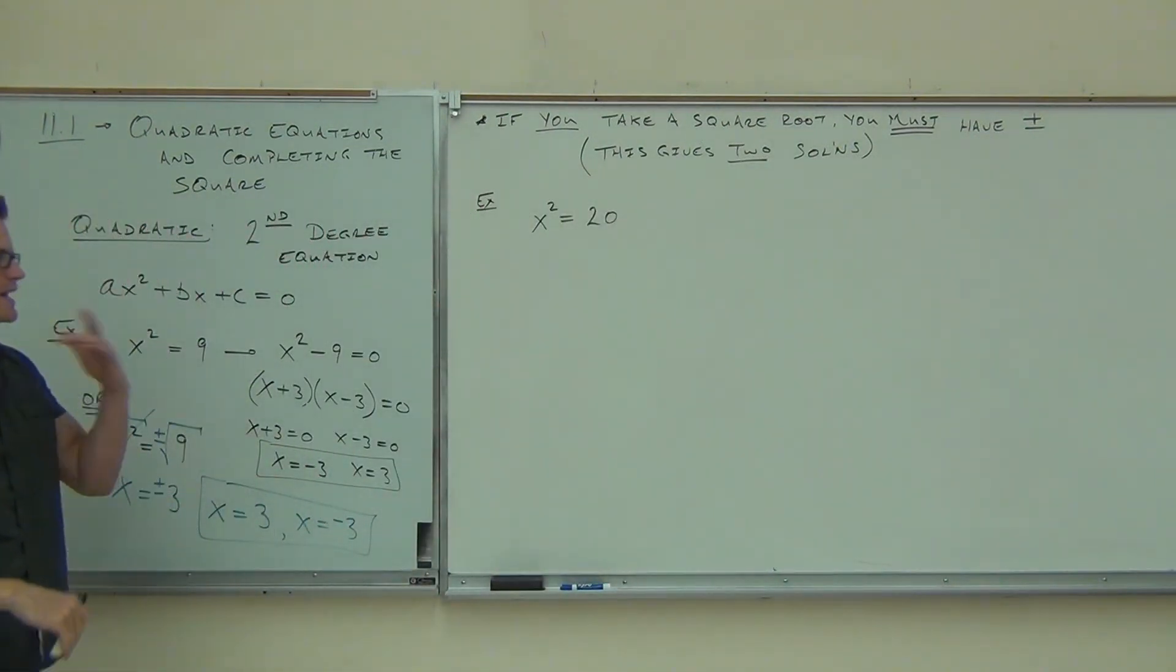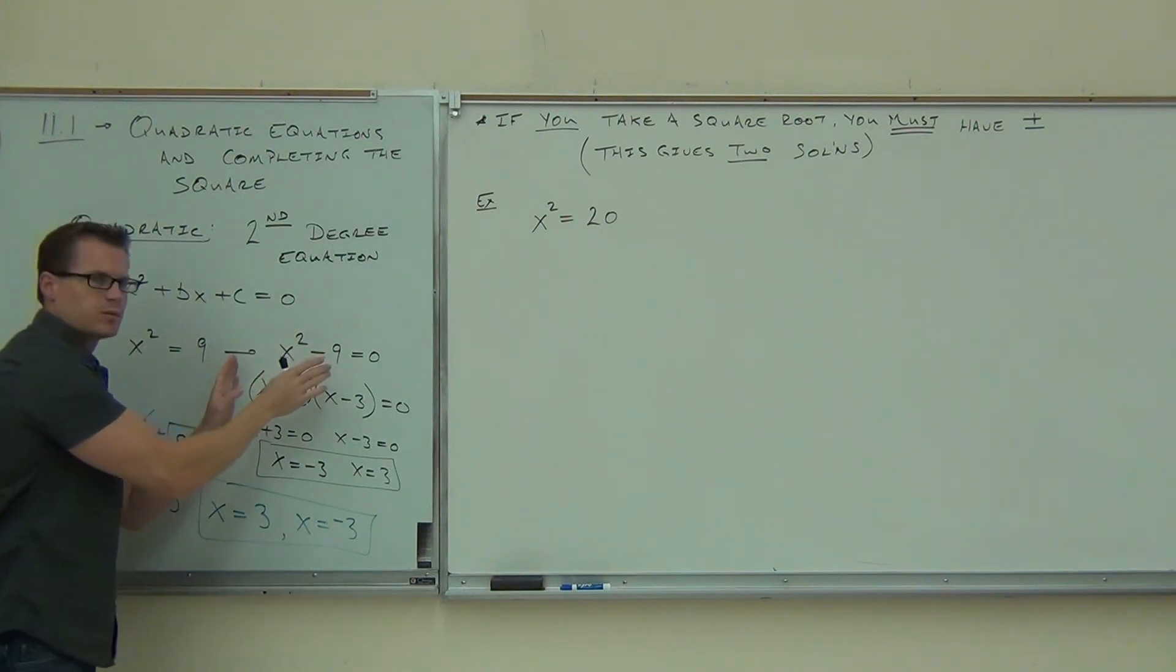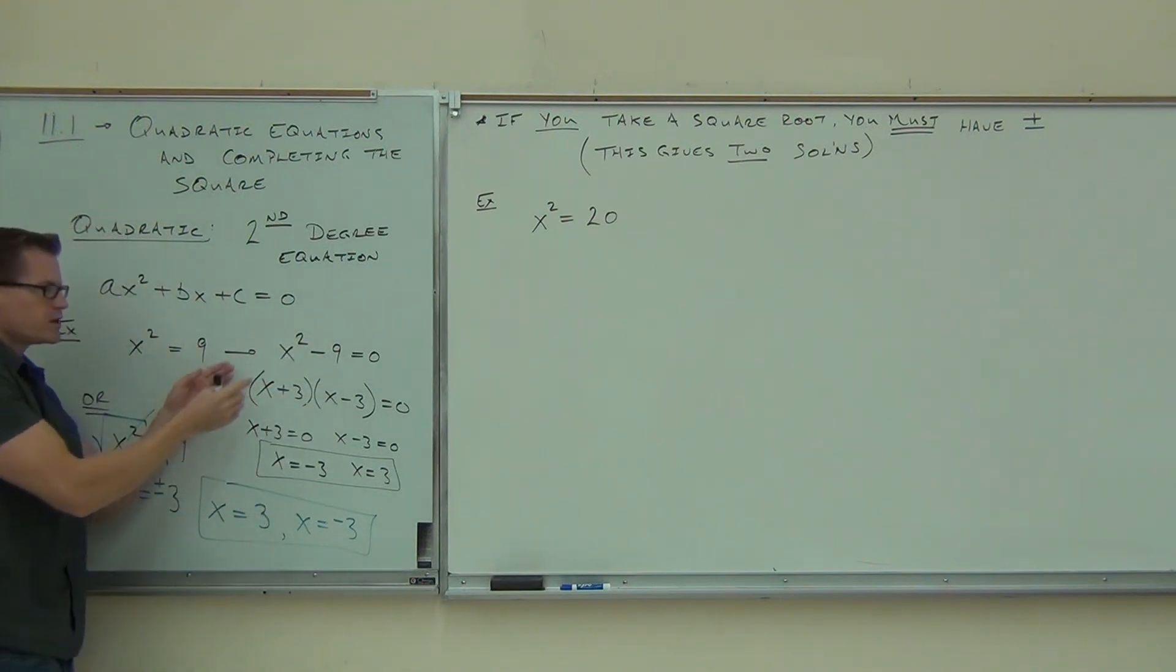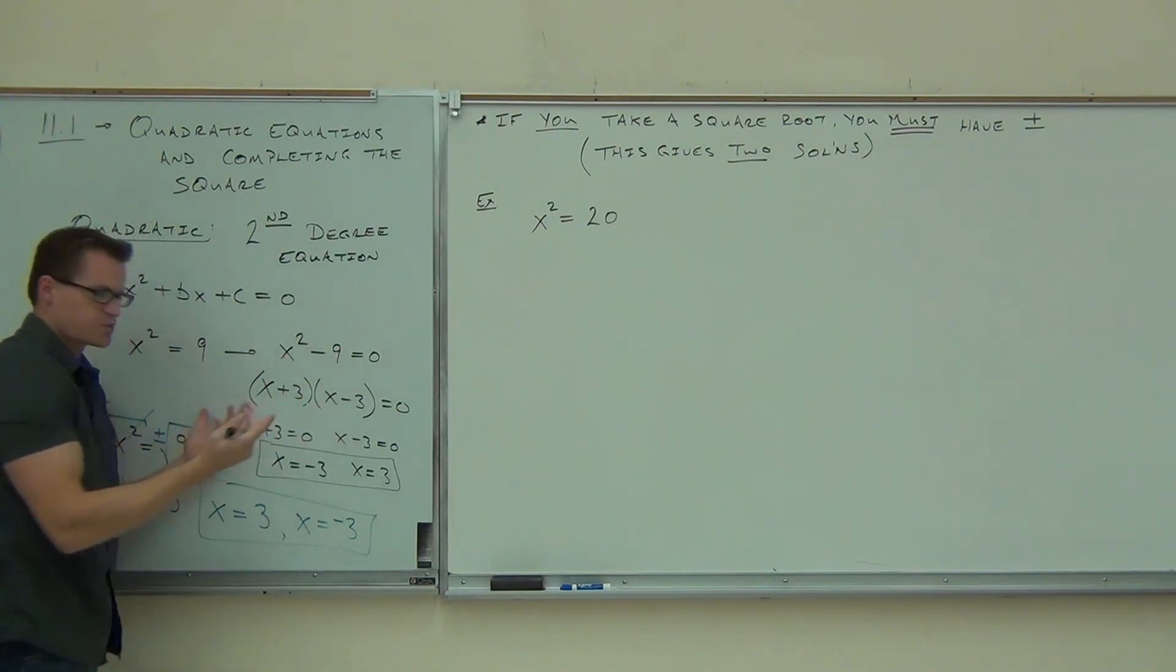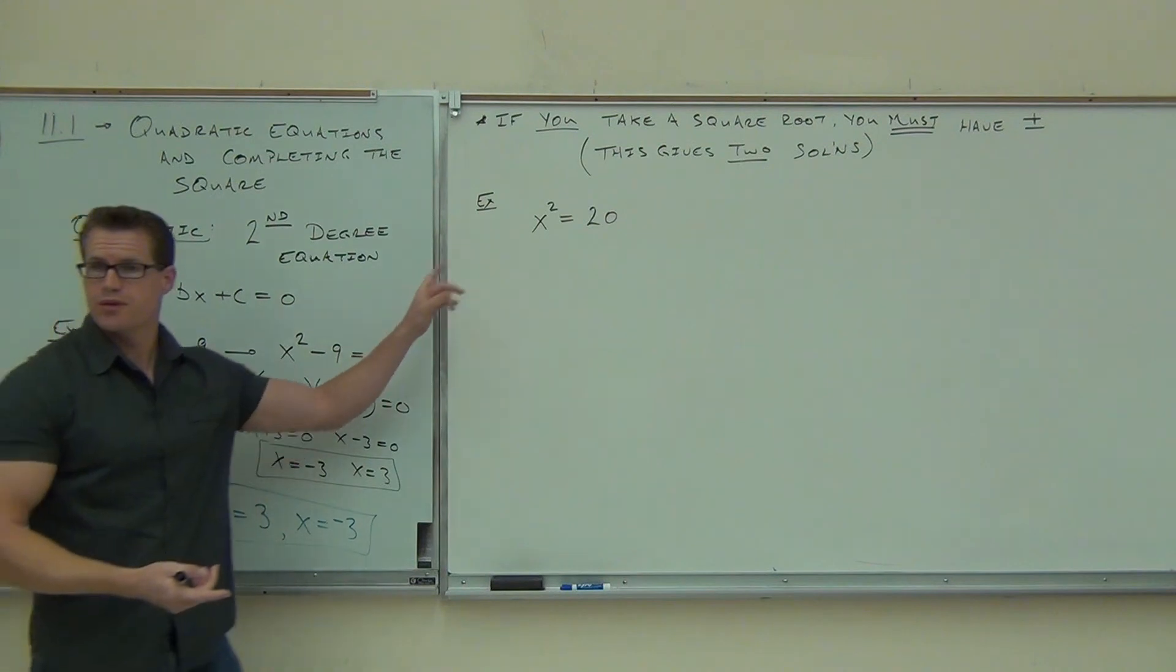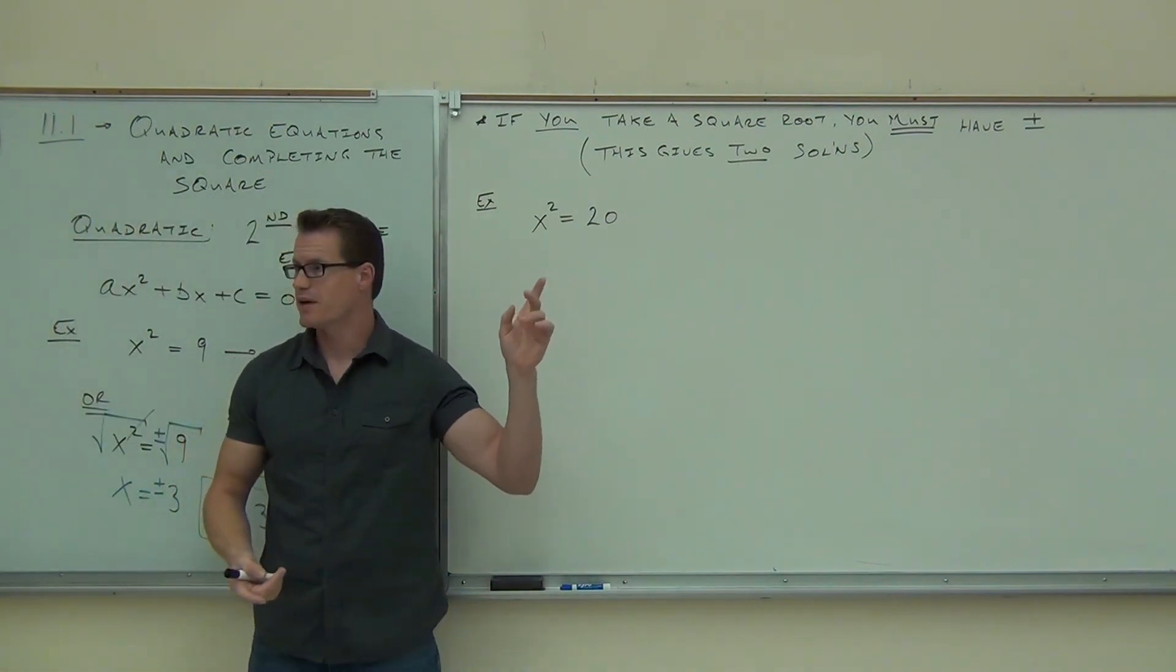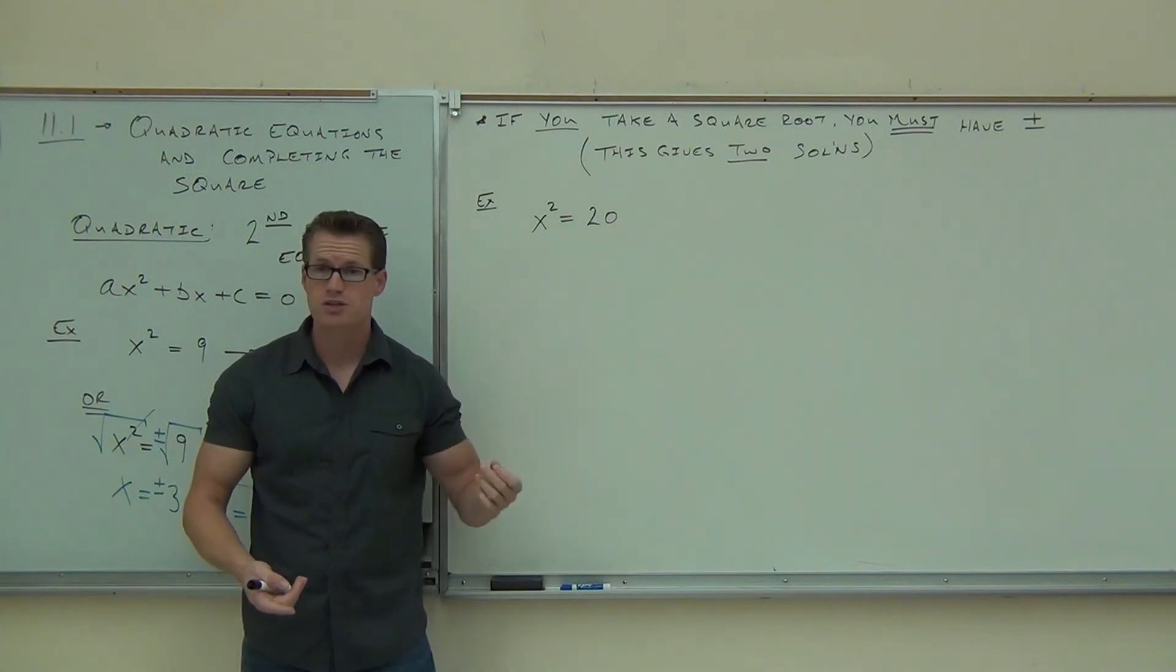Okay, so x squared equals 20. Now, in our case over here, let's look at the board again. In our case over here, this was a very nice problem because you could do it two ways. This way, you could subtract nine, and we knew how to factor difference of squares. This is pretty easy. We get three and negative three. Will a difference of squares work with this problem? If you subtract 20, you're going to have x squared minus 20. Can you factor x squared minus 20?